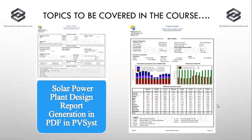Finally, we'll download the report from PVSyst. The report consists of all the parameters entered during simulation, the energy yield estimation, GHI values, string selection, and battery selection. We'll learn how to read and present this report in front of a client. This parameter will also be covered in the course. Once again, I'm Professor Kiran Bilda — welcome to the course, thank you.